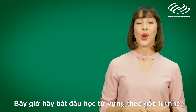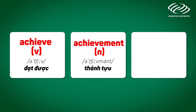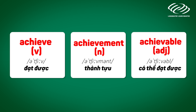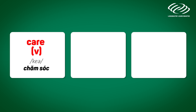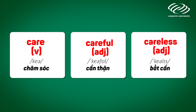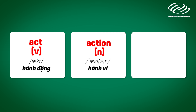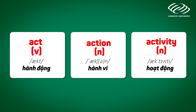Now we can start to learn vocabulary according to root words. Achieve. Achievement. Achievable. Care. Careful. Careless. Act. Action. Activity.